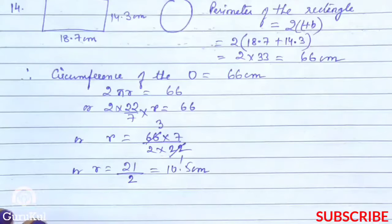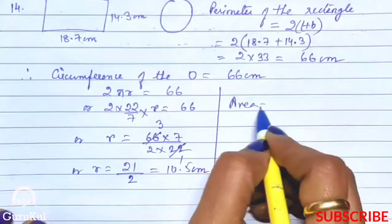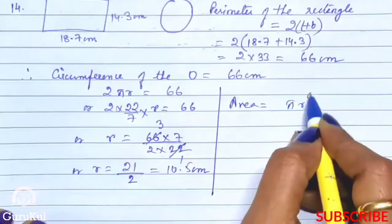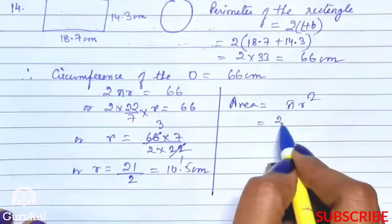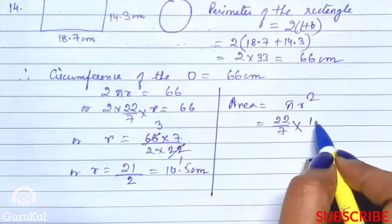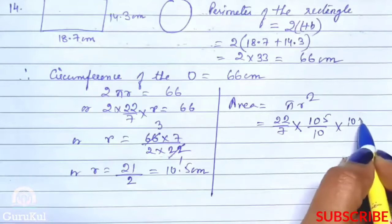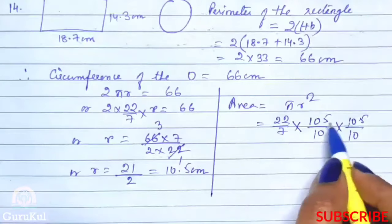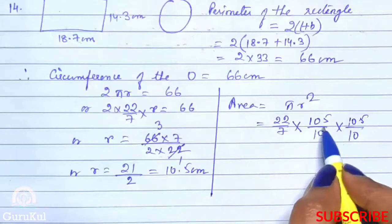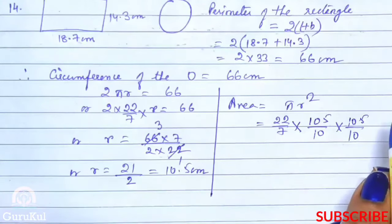Now we can easily find the area. Therefore area is equal to πr², which is 22 by 7 into 105 by 10 into 105 by 10. Radius is 10.5, 1 decimal place shifted, so that's why denominator is 10.